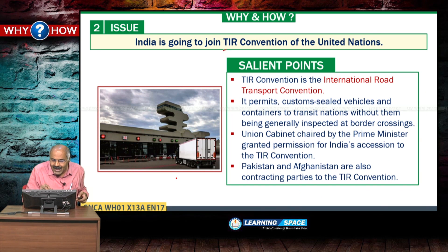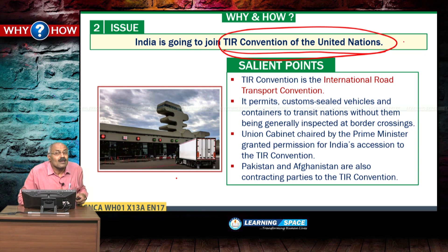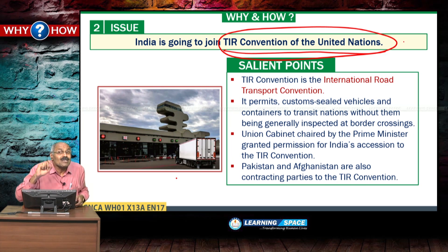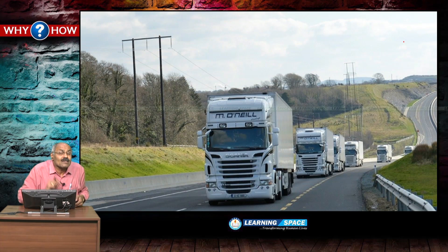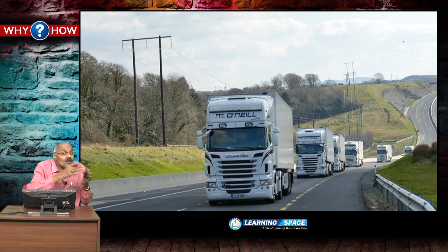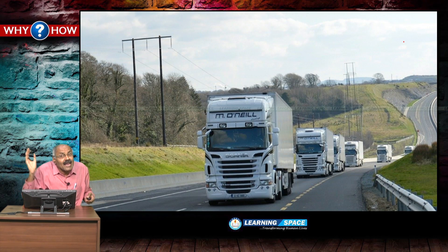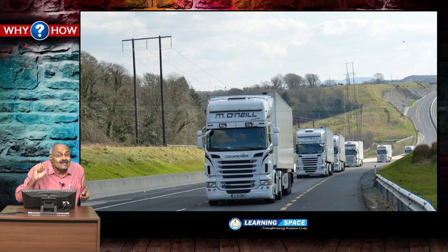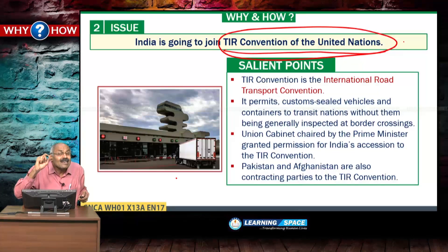India is going to join the TIR Convention of the United Nations. The TIR Convention is the International Road Transport Convention. Here, sealed containers crossing land boundaries from one country to another will be allowed to pass without customs checks, minimizing delays at country borders. That is the key feature of this International Transport Convention.